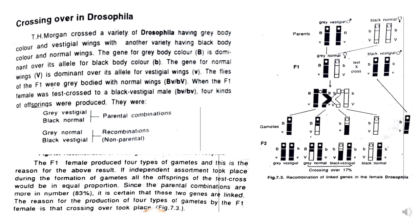When these F1 females were test crossed to a black vestigial male, four kinds of offspring were obtained. The female, heterozygous for both alleles, was crossed with the homozygous recessive male. Morgan obtained four kinds of progenies: two parental types and two recombinants. The parental types were grey vestigial and black normal, and the new combinations were grey normal and black vestigial.